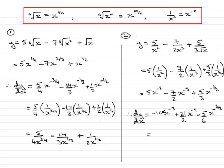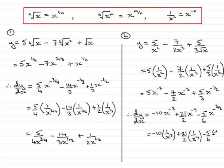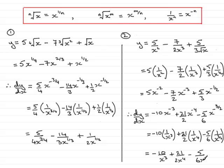Now we just need to tidy these terms up. Minus 10 times x to the minus 3 is the same as minus 10 times 1 over x cubed, using this particular result. And again, I can repeat that for the next two terms: that's 21 over 2 multiplied by 1 over x to the power 4. And for the final term, minus 5 over 6 multiplied by 1 over x to the power 3 over 2. Multiplying each of the fractions out, I get minus 10 over x cubed, plus 21 over 2x to the power 4, minus 5 over 6x to the power 3 over 2.